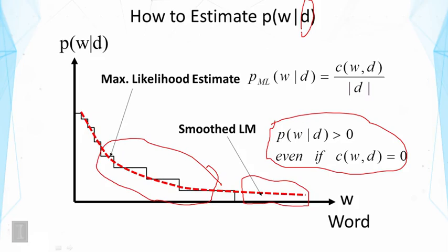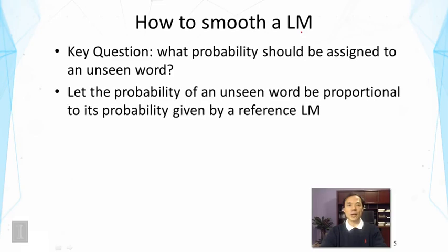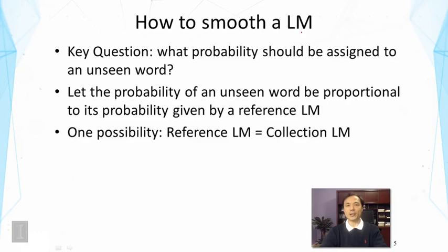The key question is what probability should be assigned to unseen words, and there are many different ways of doing that. One useful idea for retrieval is to let the probability of an unseen word be proportional to its probability given by a reference language model. That means if we don't observe the word in the document, we assume this probability is governed by a reference language model, which tells us which unseen words will likely have higher probability. In retrieval, a natural choice is to take the collection language model as the reference — so if we don't observe a word in the document, we assume its probability is proportional to its probability in the whole collection.